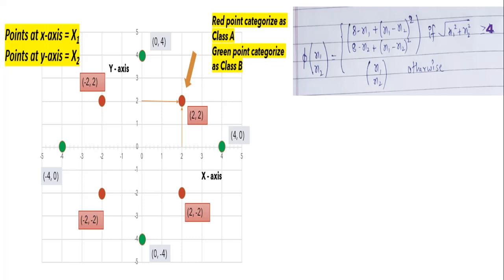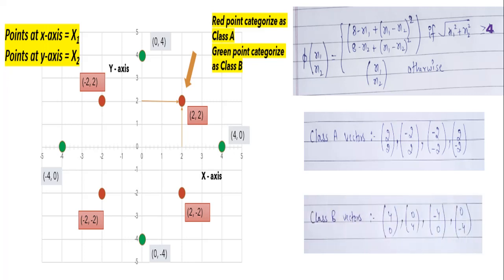Now let's say we have a mapping function as shown on the screen. If we look into Class A, we can find that square root of X1 squared plus X2 squared is less than or equal to 4, so there will not be any transformation. But if you see Class B, this will be transformed into different space because the value of square root of X1 squared plus X2 squared for Class B is greater than or equal to 4. Just to add, square root of X1 squared plus X2 squared is nothing but the Euclidean distance.